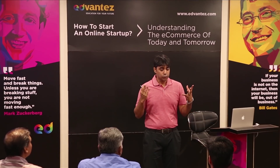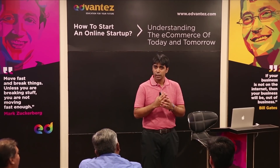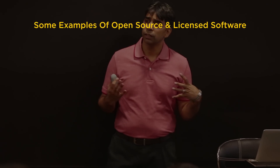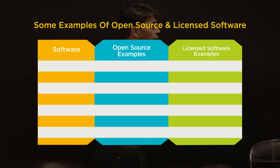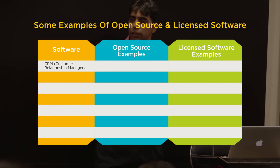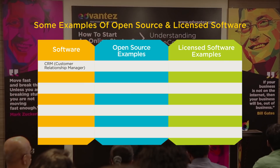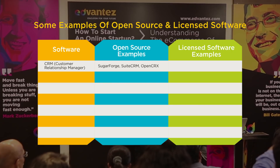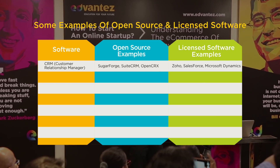Great insights from Shamik. It makes sense as far as cost and expandability are concerned. There was a question: what other examples are there besides eCommerce of open source versus licensed software? If you look at CRM — customer relationship management — there are open source options like SugarForge, SweetCRM, OpenCRX, and licensed ones like Zoho, Salesforce, Microsoft Dynamics.